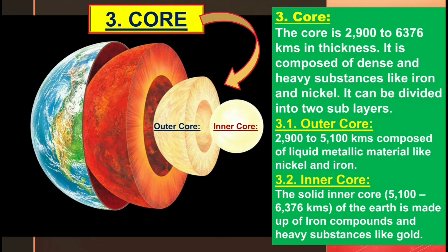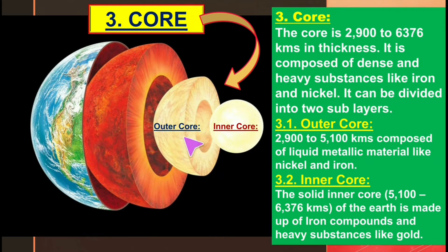The third layer is the core. The core is 2900 to 6376 kilometers in thickness. It is composed of dense and heavy substances like iron and nickel. It is divided into two sub-layers: the outer layer is known as the outer core and the inner layer is known as the inner core.